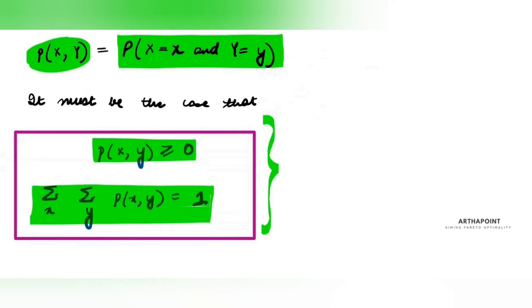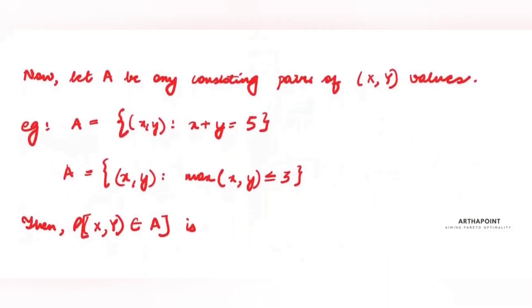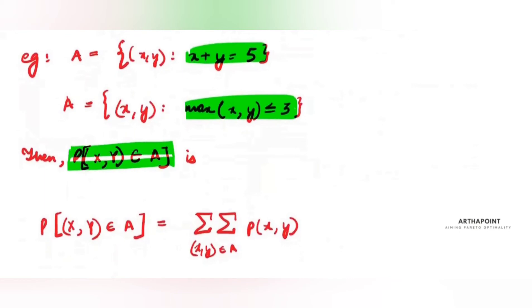For example, A is a set consisting of pairs X,Y such that X+Y sums to 5 or such that max of X,Y is less than or equal to 3. Then, what is the probability that X,Y belongs to A? This is the probability that you are summing for all such possible values of X,Y belonging to the set A.